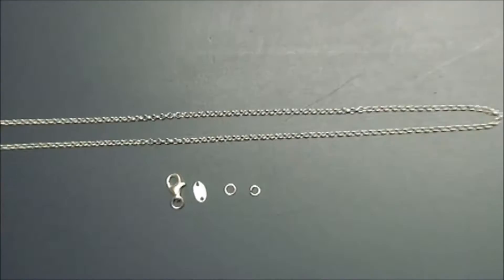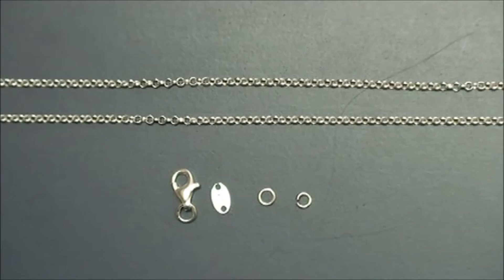Here we have our sterling silver 2mm rolo chain, sterling silver lobster clasp quality tag, and our 4 and 3.5mm open jump rings. These are the materials we're going to use.